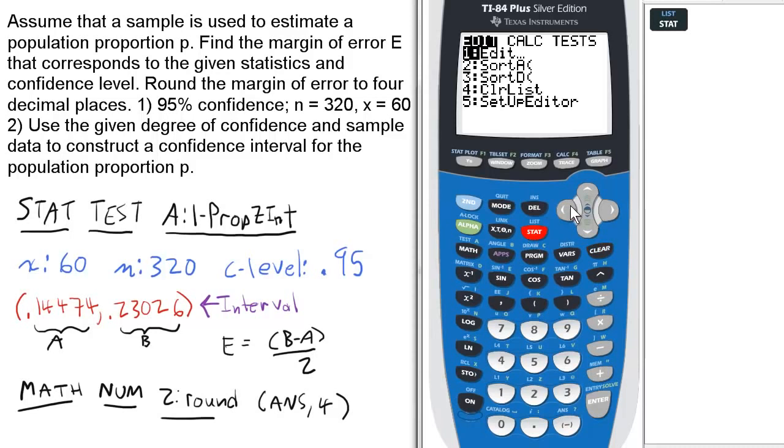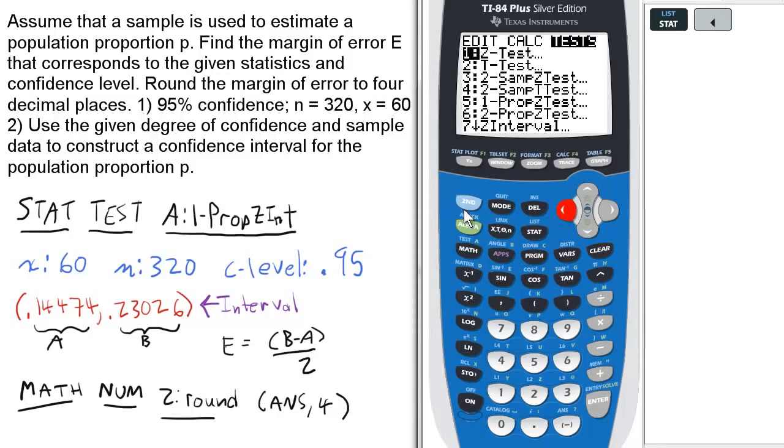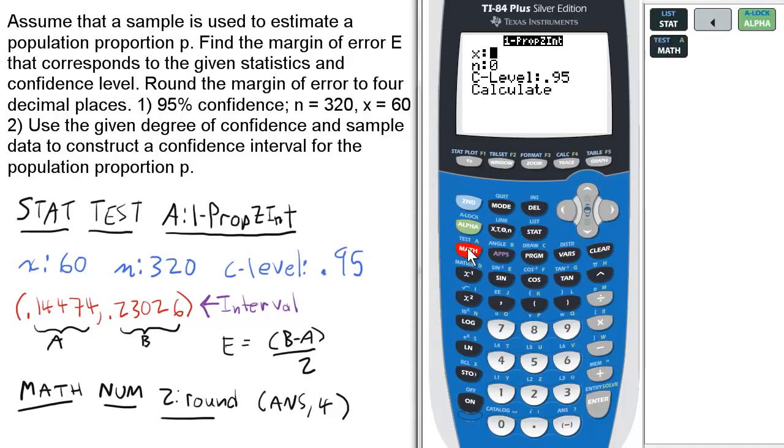Press STAT, scroll over to TESTS, select alpha A for 1-PropZInt.